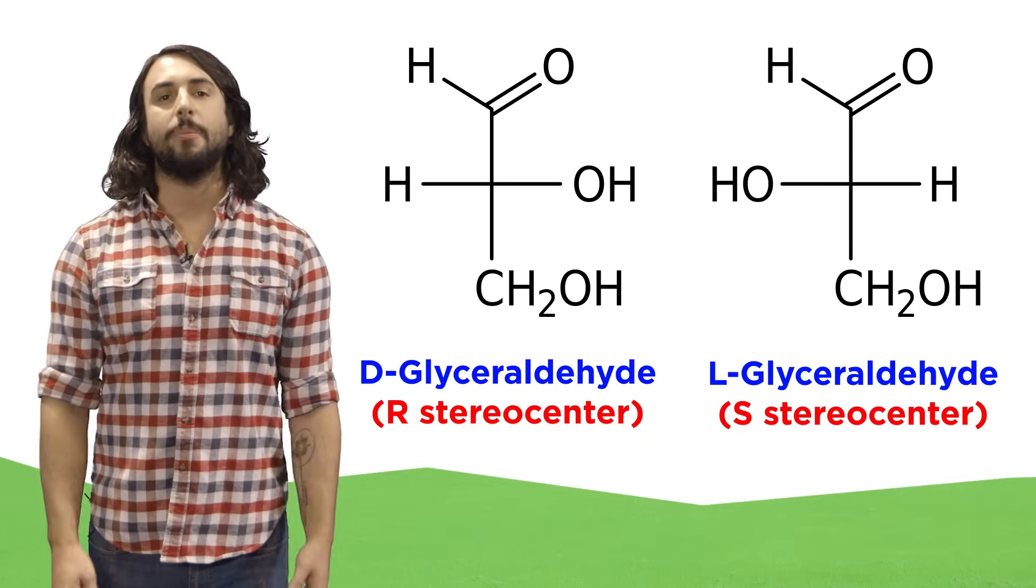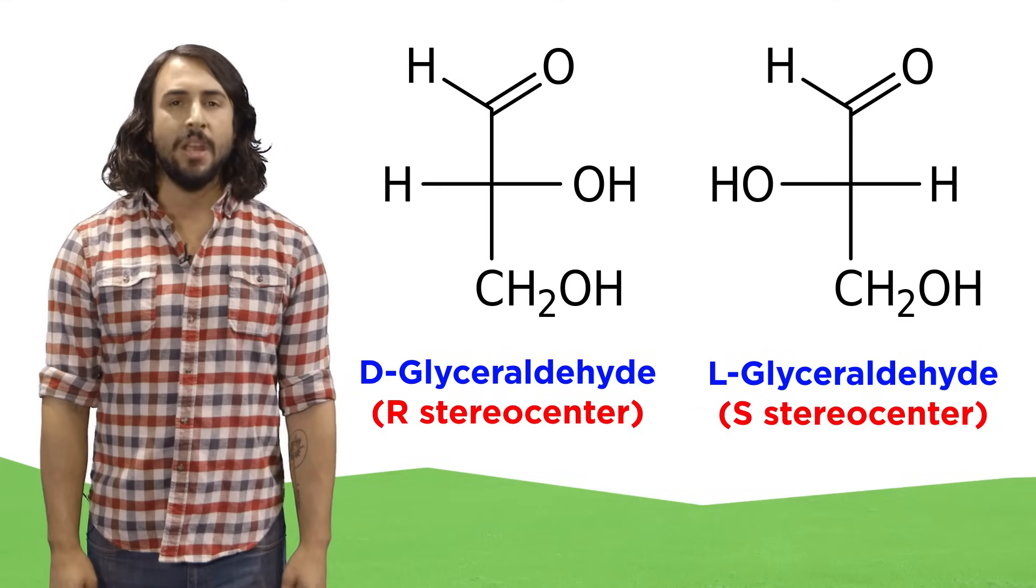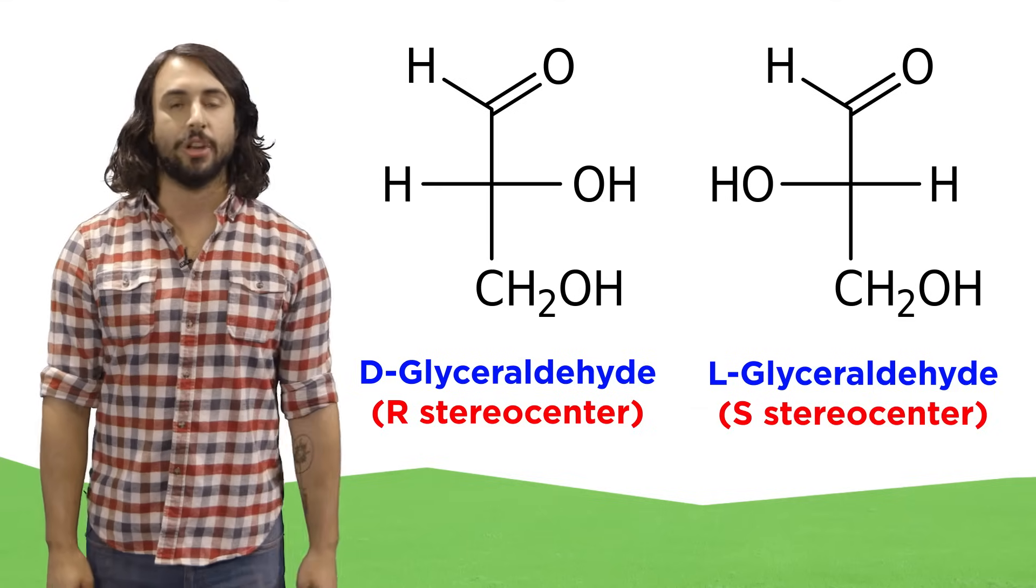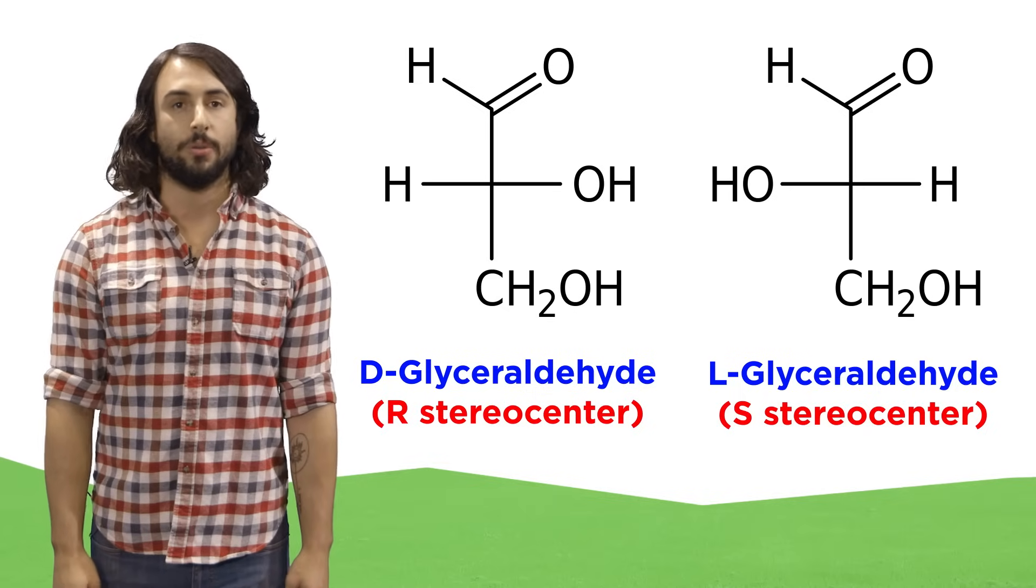We got this from glyceraldehyde, the simplest sugar and an aldotriose. This has only one chiral center, and we developed D and L terminology according to the two enantiomers of this molecule.